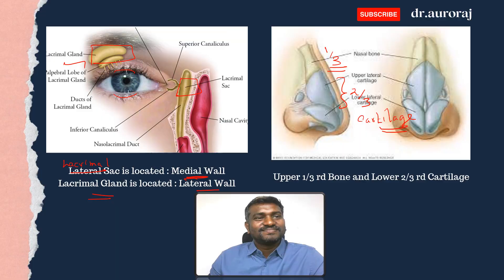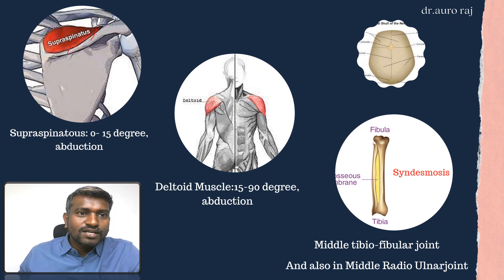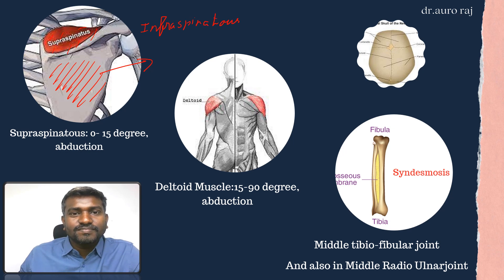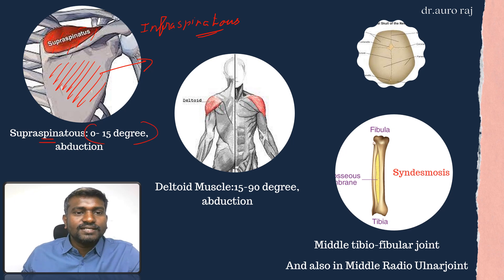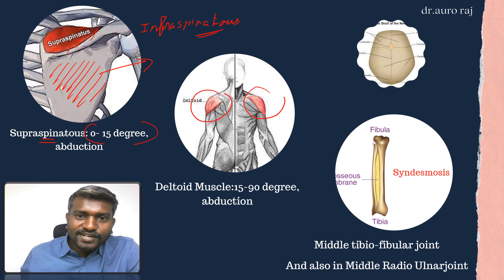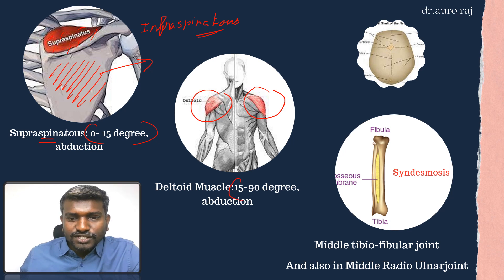The muscle here is called supraspinatus, and the muscle in this region is infraspinatus. Supraspinatus is responsible for 0 to 50 degrees of abduction. The deltoid muscle is responsible for abduction from approximately 15 to 90 degrees.